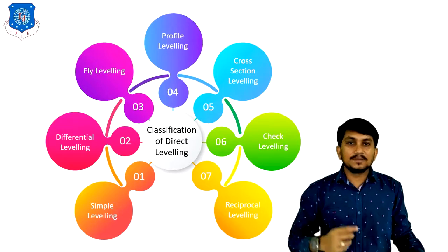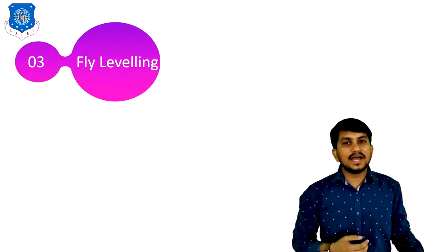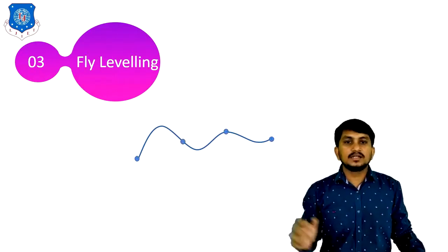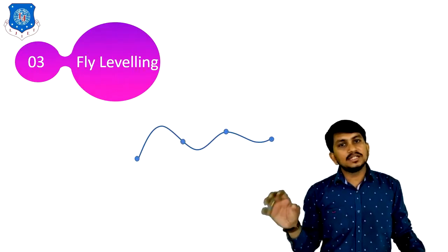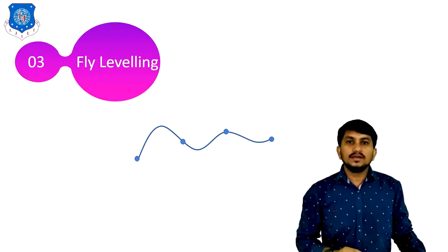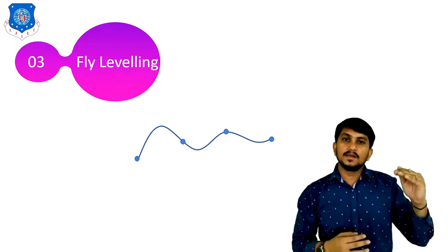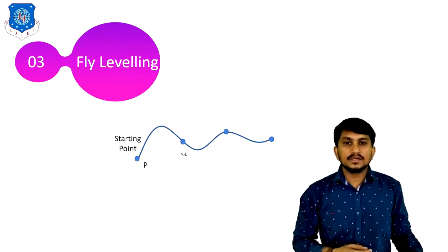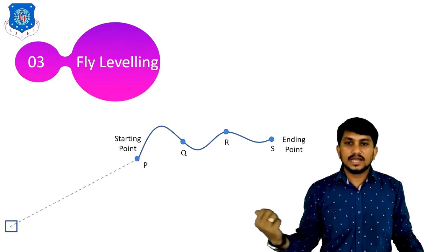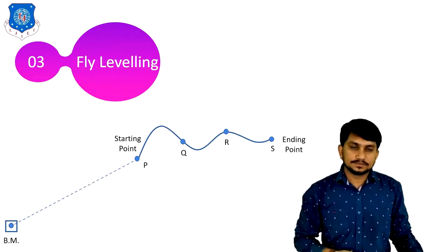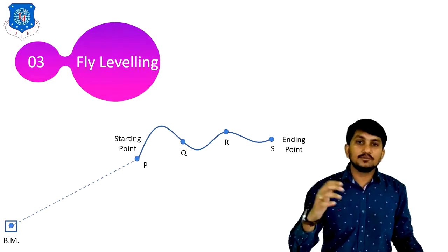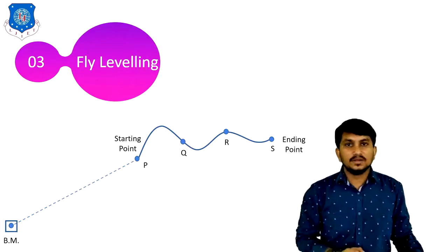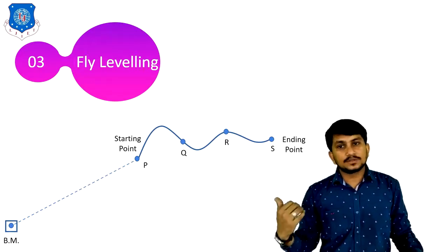Now let's discuss the third type of leveling, which is fly leveling. Suppose this is an uneven ground; our goal is to prepare the profile of this uneven ground. For that, a number of points are marked onto the ground and the level difference of these points is found out. But here we have to find the level difference from a reference — the benchmark — which is far apart from the starting point P. So we have to transfer the level from the benchmark to the starting point. To do this, fly leveling is used. It is one type of differential leveling which is used to transfer the level of the benchmark to the starting point.